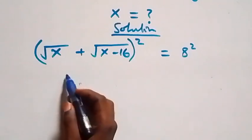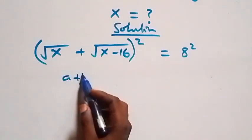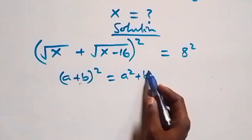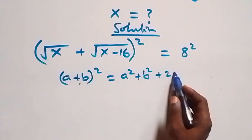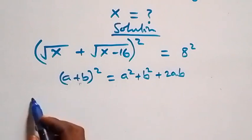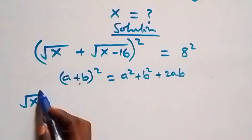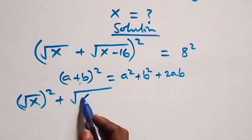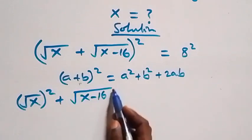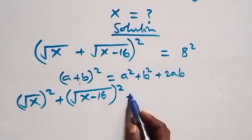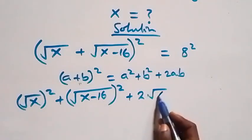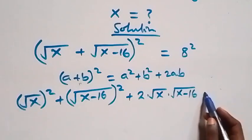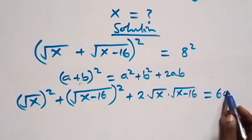This follows from the identity (a + b)² = a² + b² + 2ab. Applying this, we get (√x)² + (√(x-16))² + 2·√x·√(x-16) equals 8 squared, which is 64.